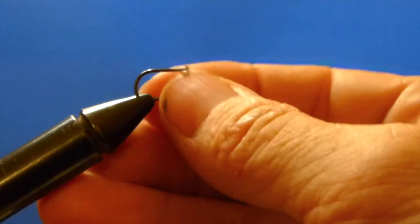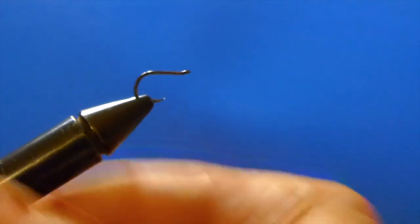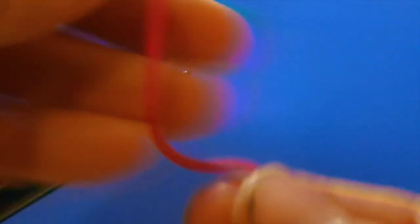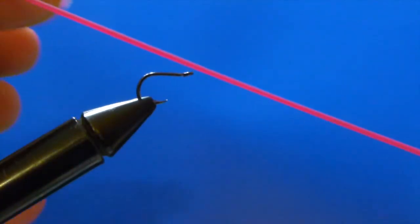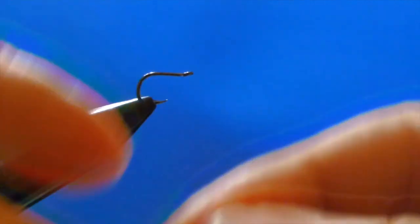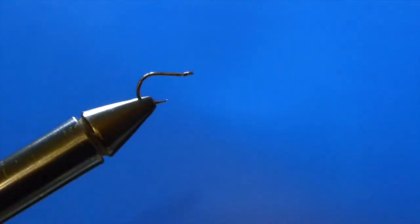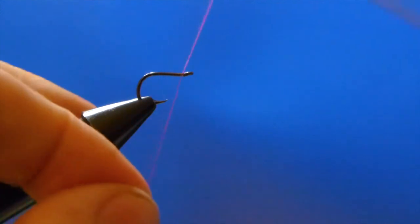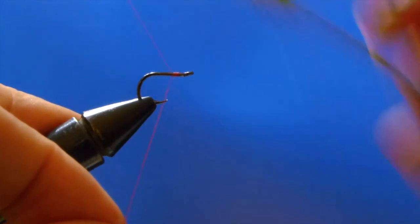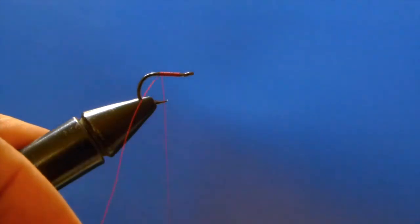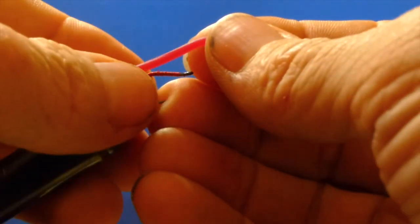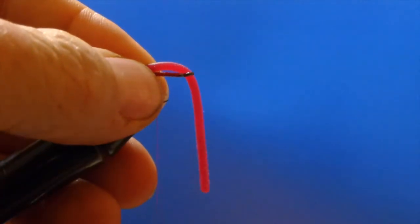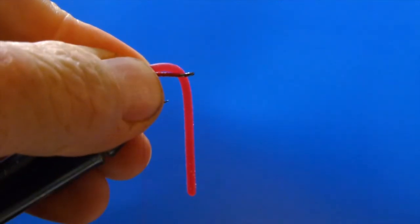And we have one final fly that I'd like to go over today. And this is very similar to the San Juan worm except it uses a silicone rubber material instead of the ultra chenille. This is called a squirmy wormy. Tying it is exactly the same as our San Juan worm, and we will tie it all the way back covering the whole shank of the hook.